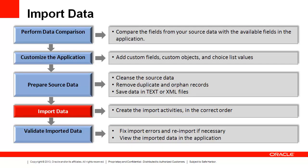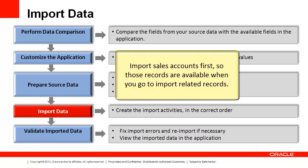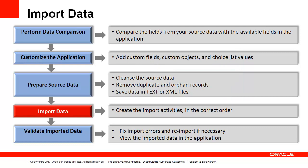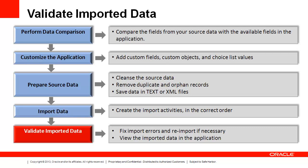Once your source files are clean and ready, you can create your file import activities in the application. Keep in mind that there is a correct order when importing objects. For example, you should import sales accounts first, so those records are available when you go to import contacts and other data related to sales accounts. See the other segments in this series for a walkthrough of the steps involved in creating an import activity. Once your import activity is complete, you should check the status and review any errors, then view the imported data in the application. If necessary, fix import errors and re-import.